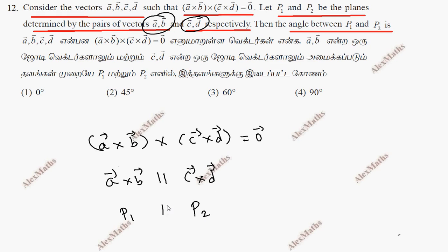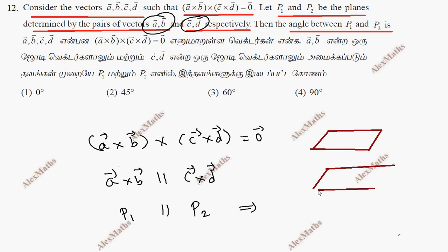So P1 is parallel to P2. The angle between parallel planes P1 and P2 is 0 degrees. So the answer is option 1.